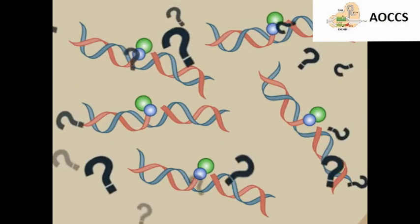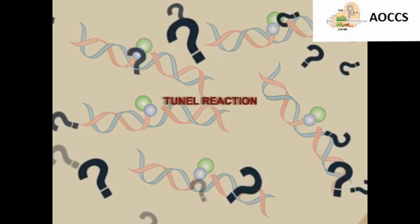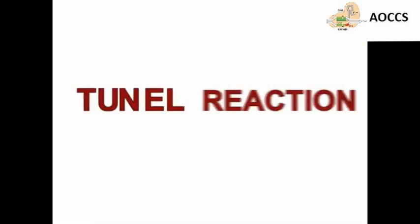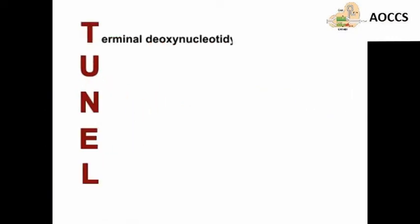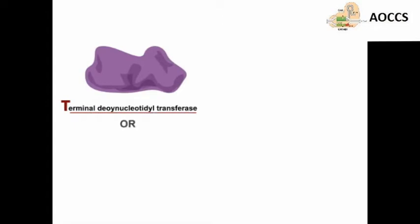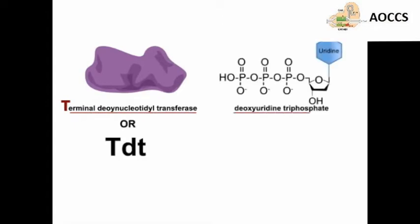But how does this happen? For that, you have to understand the TUNEL reaction. TUNEL stands for Terminal Deoxynucleotidyl Transferase mediated dUTP Nick-End Labeling. The two main TUNEL reagents are Terminal Deoxynucleotidyl Transferase (or TdT) and deoxyuridine triphosphate (or dUTP), which may be fluorescently labeled for ease of detection.